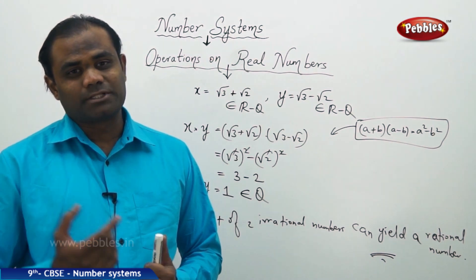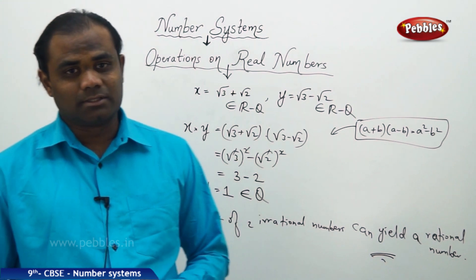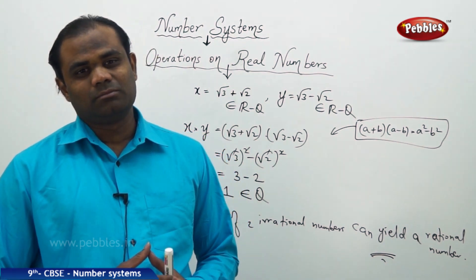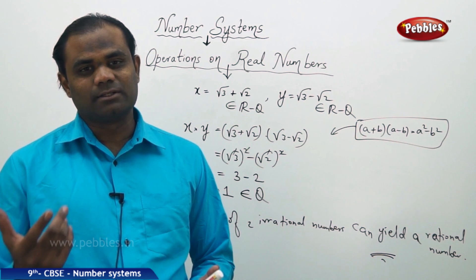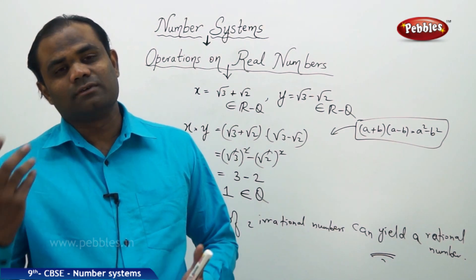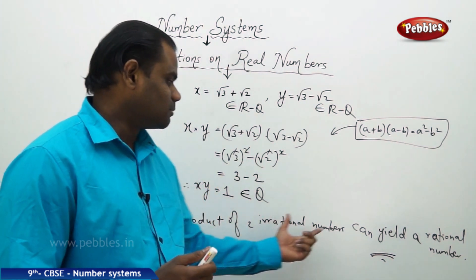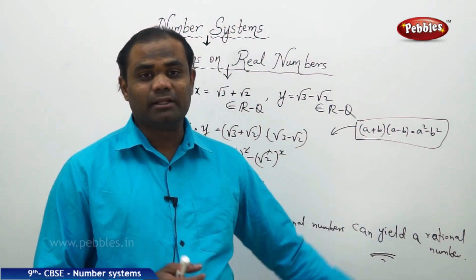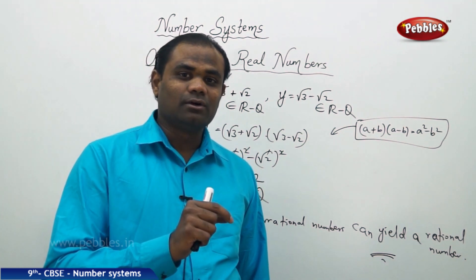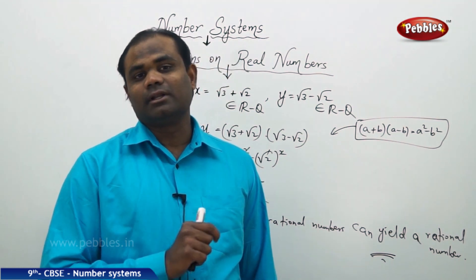What about two rational numbers when multiplied? The product of two rational numbers cannot yield an irrational number — it always gives a rational number. The only exception is that two irrational numbers when multiplied may give a rational number, whereas two rational numbers when multiplied always give a new rational number.